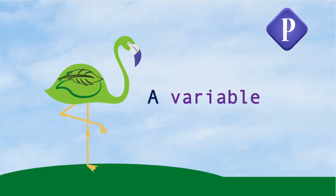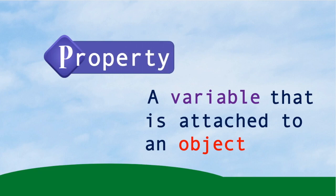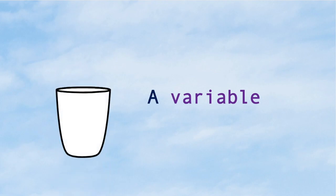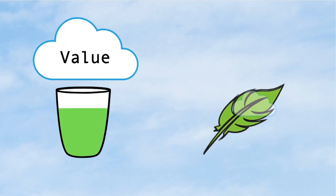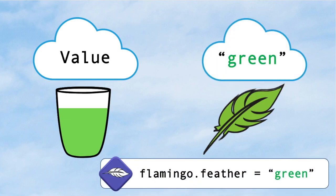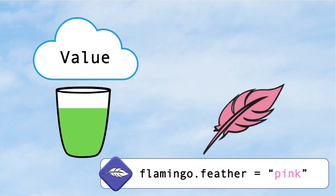In coding, when there is a variable like feather color that is attached to an object like a flamingo, it is called a property. A variable is like a container that stores information called a value. Here, the feather variable stores a value of green. So we call the feather property value green as well. What do you think the feather property for the other flamingo is? You got it — pink.